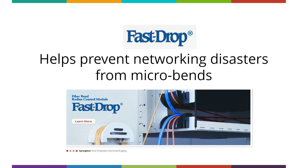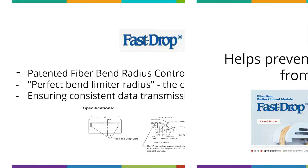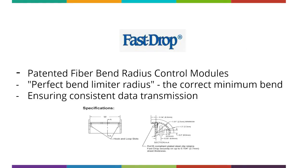FastDrop has patented fiber bend radius control modules designed with a perfect bend limiter radius, which provides the correct minimum bend for fiber and copper network cables, ensuring consistent data transmission.